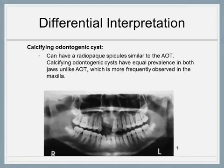Calcifying odontogenic cysts are a differential for AOT due to their slow-growing, benign form. Like an AOT, the calcifying odontogenic cyst can also have a radiopaque spicule. However, calcifying odontogenic cysts have an equal prevalence in both jaws, unlike AOT, which is seen more frequently in the maxilla.